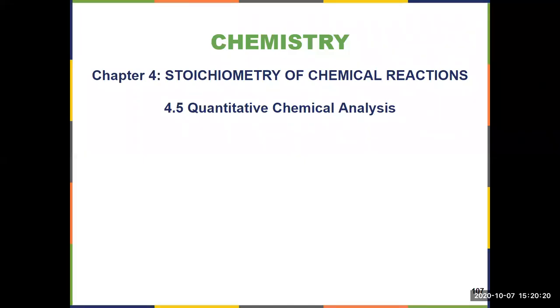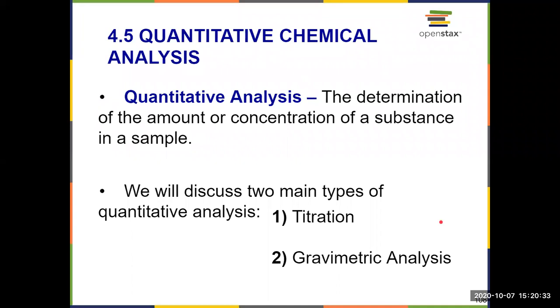In our sixth and final installment of Chapter 4, we're looking at 4.5, Quantitative Chemical Analysis, which is really just taking all the ideas from Chapter 4 and tying them together, figuring out how they're actually used in the lab. So what is quantitative analysis? The determination of the amount or concentration of a substance within a sample. There are two main types, arguably three, that are introduced in 4.5.